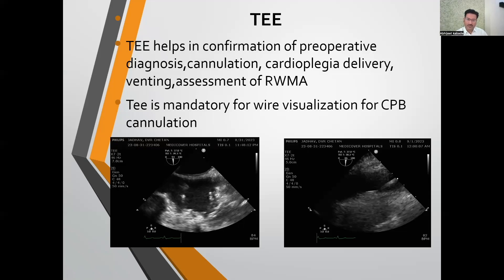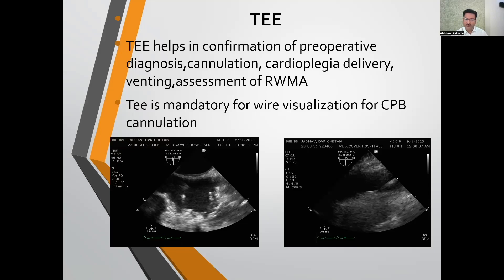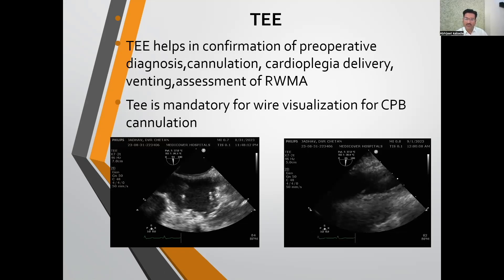When the anesthesiologist places the SVC cannula, we must always visualize the guide wire after it enters the SVC — after cannulating from the right internal jugular vein. The other TEE video shows the descending aorta long axis view. For femoral arterial cannulation, surgeons pass a guide wire through the femoral artery and we must visualize it in the descending aorta. Only after confirmation of the guide wire position should we allow the surgeon to place the arterial cannula.